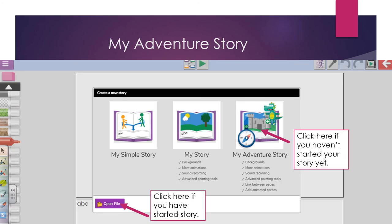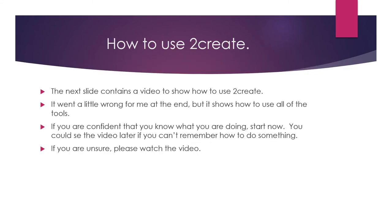Once you've clicked on that, you'll get the choice of using My Adventure Story — click on here if you haven't started your story yet. If you have started and didn't use the My Work section, go to Open File and you can open your story from there. If you're confident you know what you're doing, start now. If you're unsure, please watch the video.